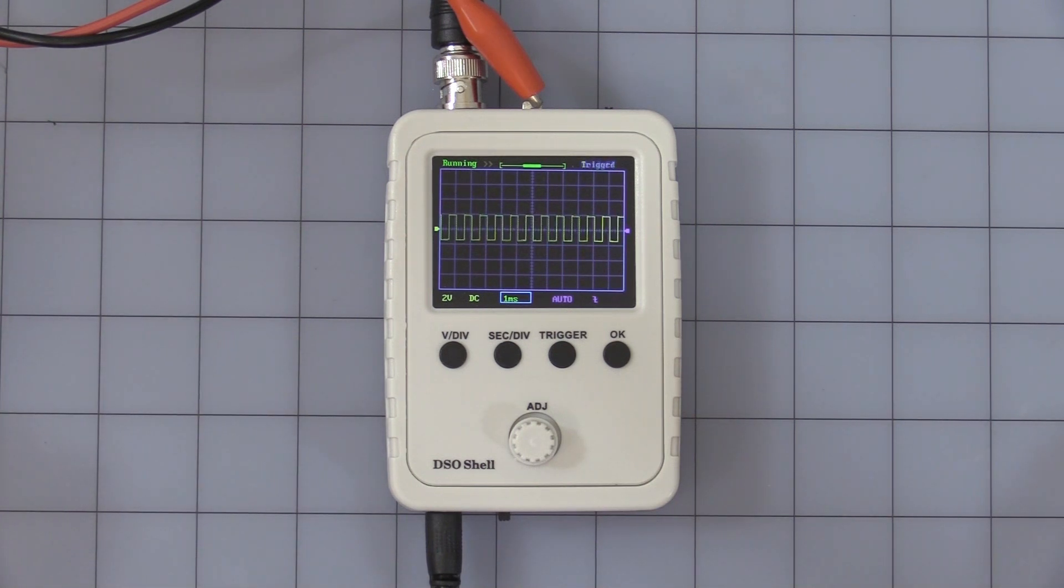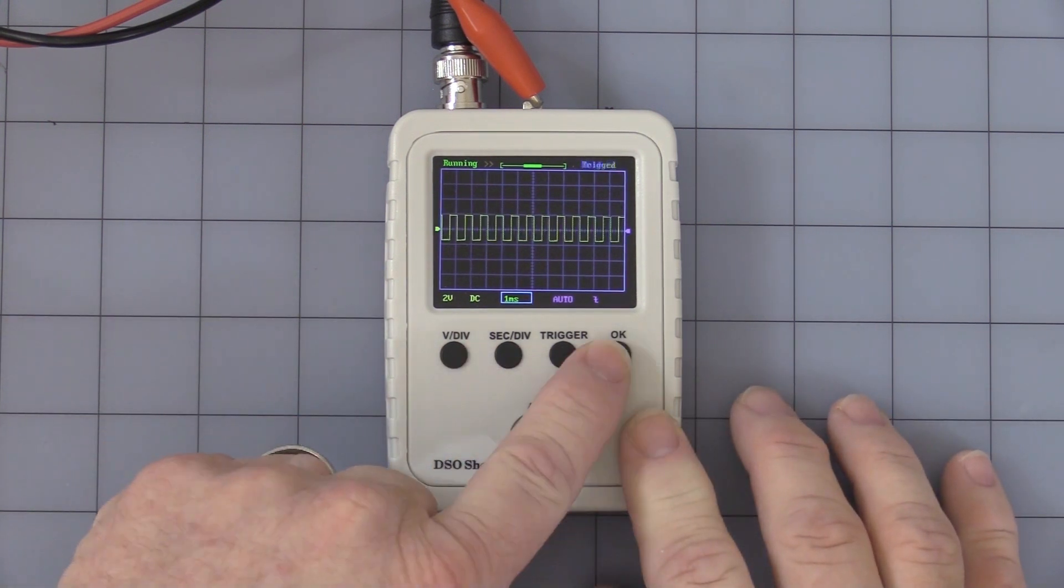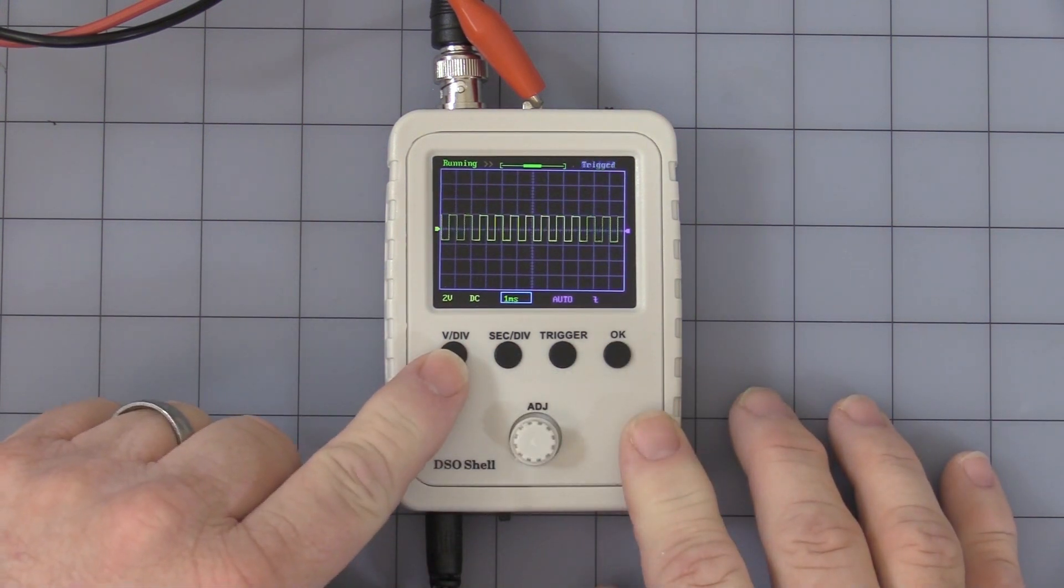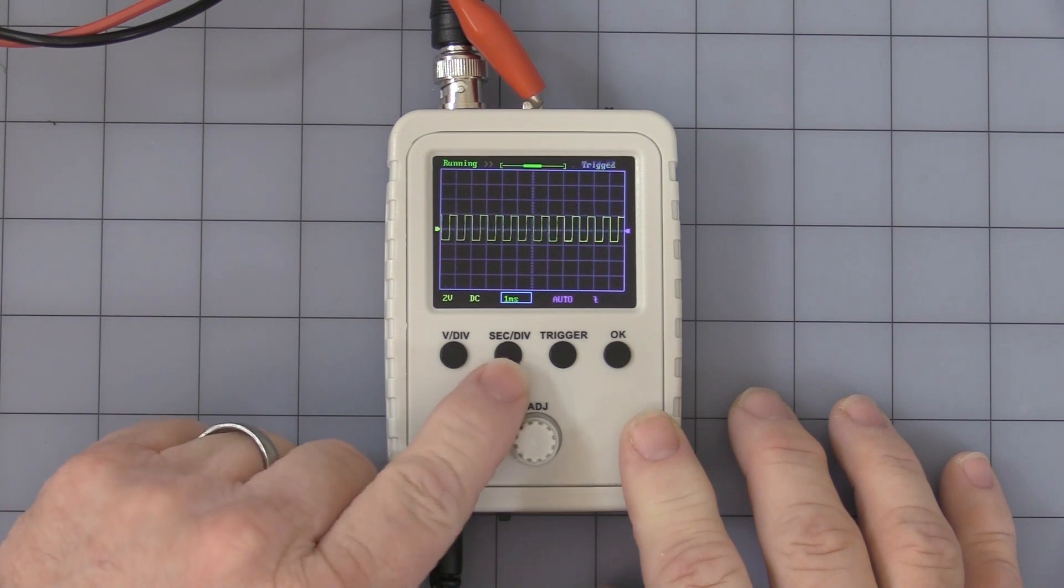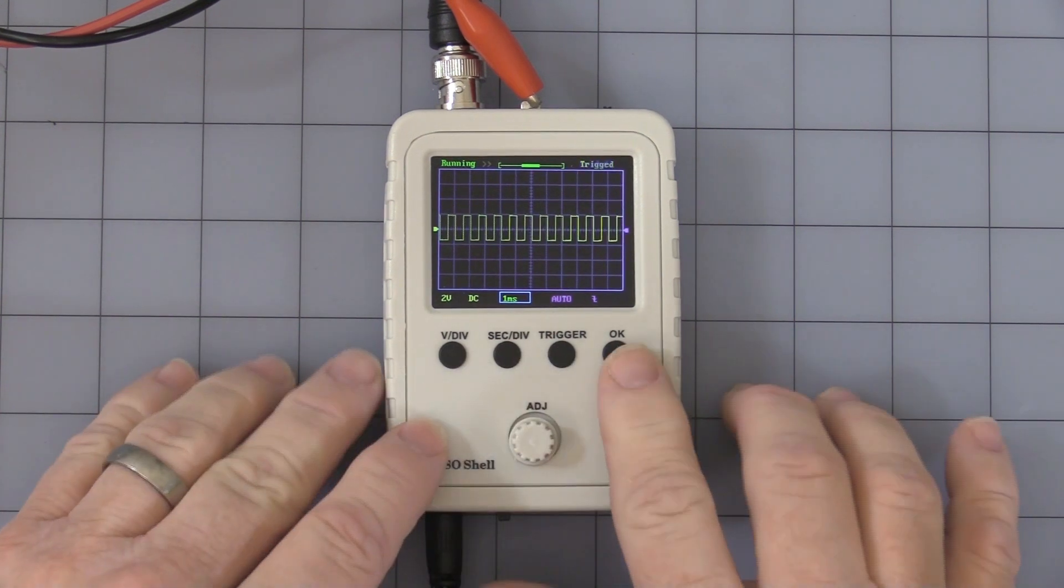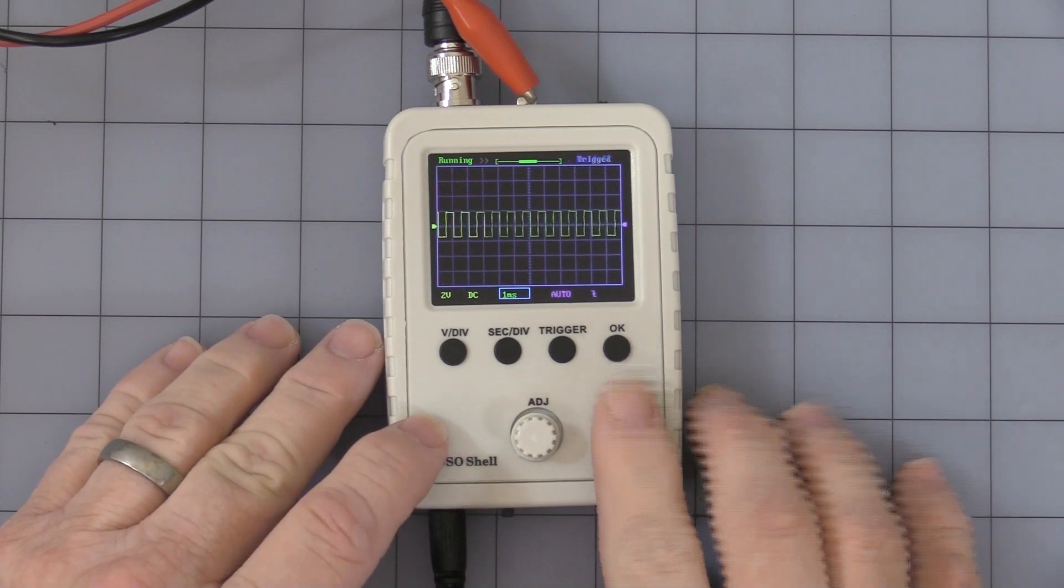It has four buttons across it. This is your voltage division, your time division, your trigger set, and an OK button. I'll show you what that does in a moment. And it has a rotary encoder and a push button.